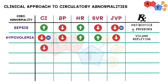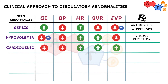The third condition is similar to the one above, however the JVP is high. This suggests that we have a problem with the pump itself, and the treatment in this case is to support the pump — either by altering the loading conditions, or with the support of inotropic agents or devices.